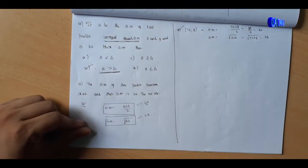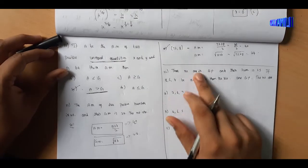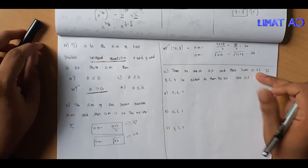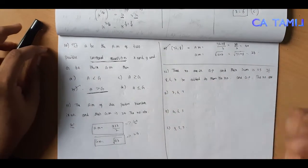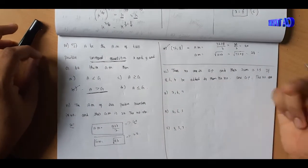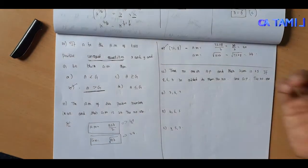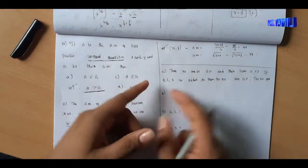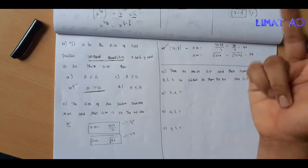The next problem: 3 numbers are in AP and their sum is 15. If 8, 6, 4 are added to the numbers respectively, they form a GP.